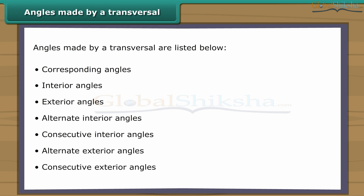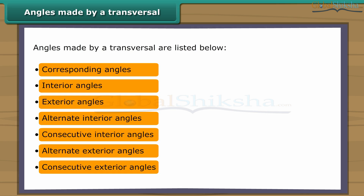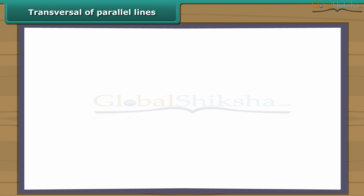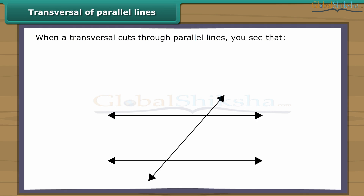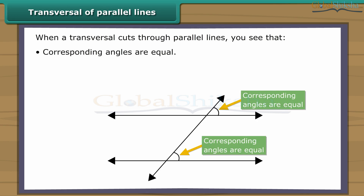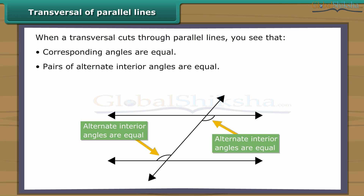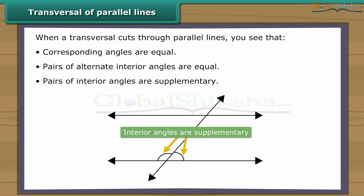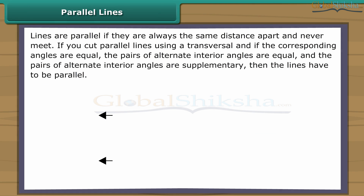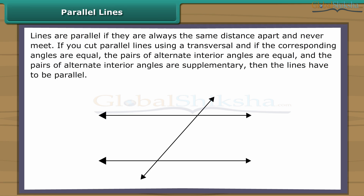When a transversal cuts through parallel lines, you will see that corresponding angles are equal, pairs of alternate interior angles are equal, and pairs of interior angles are supplementary. Lines are parallel if they are always the same distance apart and never meet. You can also check if lines are parallel by cutting them using a transversal — if the corresponding angles are equal, the pairs of alternate interior angles are equal, and the pairs of alternate interior angles are supplementary, then the lines have to be parallel.